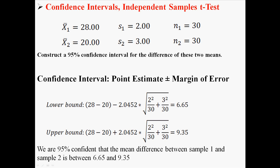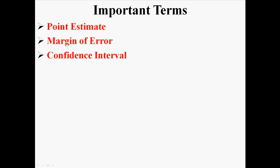What this means is that we are 95% confident that the mean difference between sample 1 and sample 2 lies somewhere between 6.65 and 9.35. And that's all it means to construct a confidence interval for an independent samples t-test.